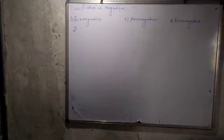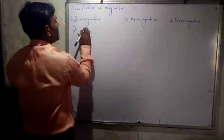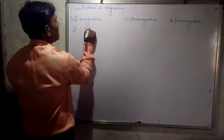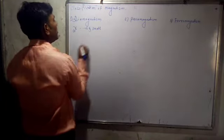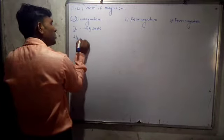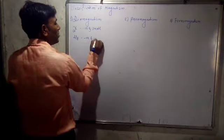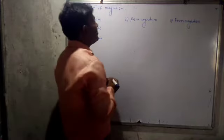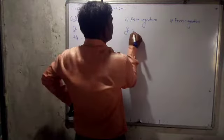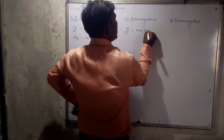In Diamagnetism, magnetic susceptibility is negative and small. Relative permeability is also negative and small. In Paramagnetism, magnetic susceptibility is positive and small.